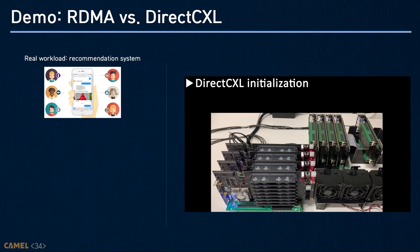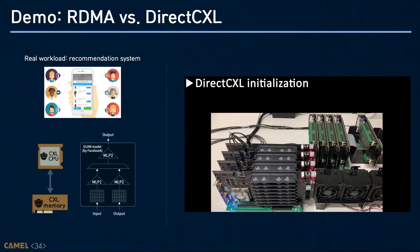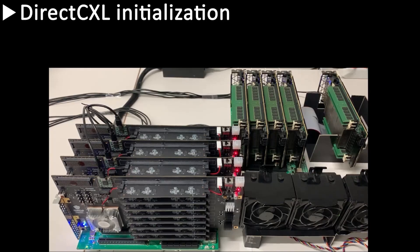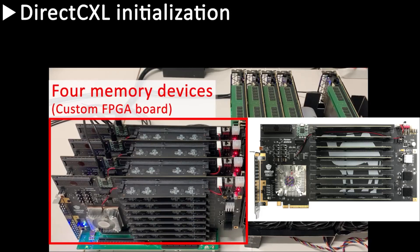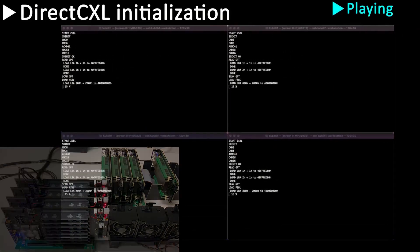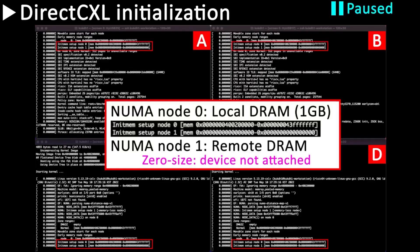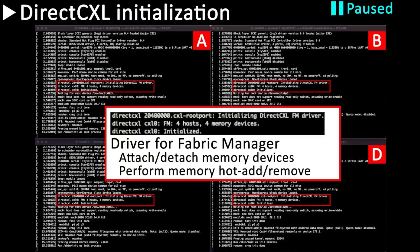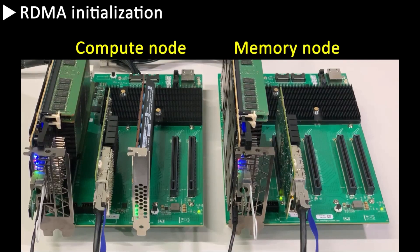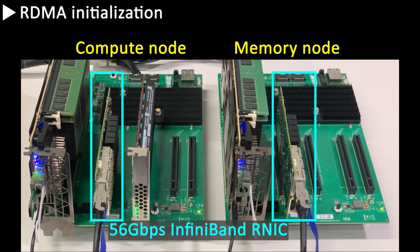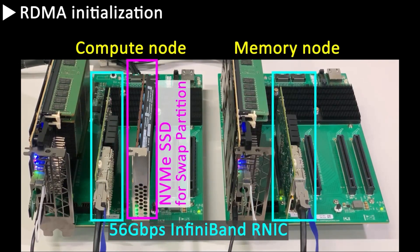Finally, I will show a demo video comparing the performance of a recommendation system using existing RDMA-based solution and DirectCXL. We used the DLRM model from Meta, and the whole embedding table is stored in remote memory. On the left side there are four customized FPGA boards for CXL memory devices. On the upper right side, four accelerator cards are used for CXL hosts and one for the CXL switch. Each terminal shows the booting process of each host. Each host's local memory is 1 GB, with an additional NUMA node reserved for remote memory. For comparison, we used the same accelerator card for the RDMA system, using InfiniBand FDR for the RDMA network and one NVM SSD for creating a swap partition.